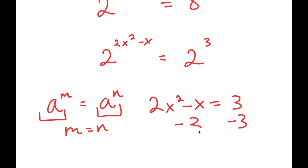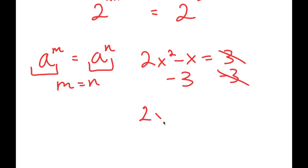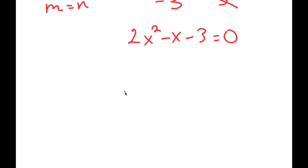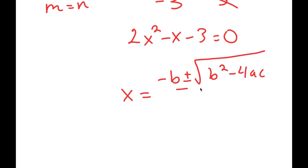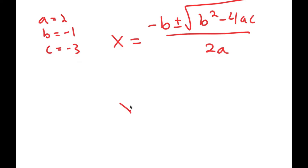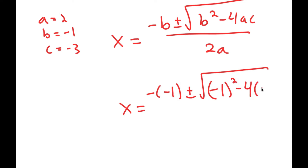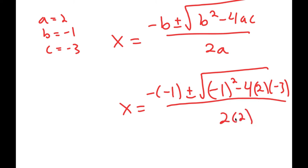If I subtract 3 from both sides, I get 2x squared minus x minus 3 is equal to 0. To solve this I'm going to use the quadratic formula: negative b plus or minus the square root of b squared minus 4ac all over 2a. In this case, a is 2, b is negative 1, and c is negative 3. So I get x equals negative of negative 1 plus or minus the square root of negative 1 squared minus 4 times 2 times negative 3, all over 2 times 2.